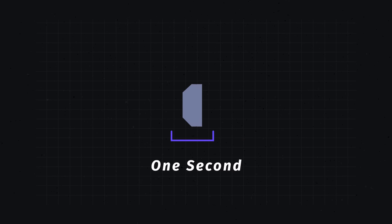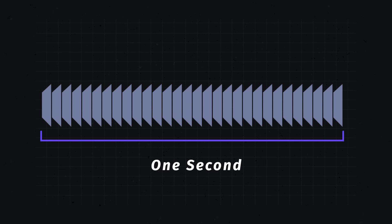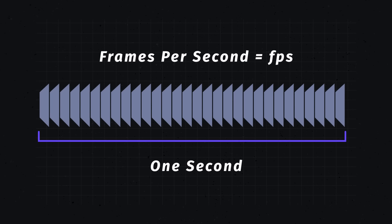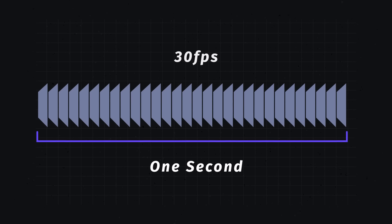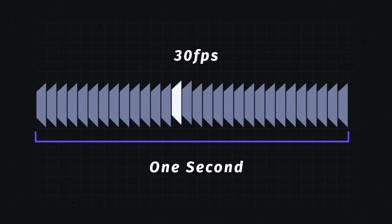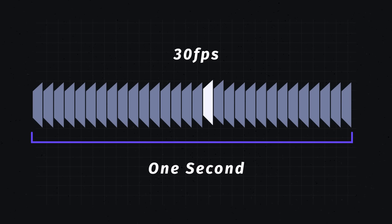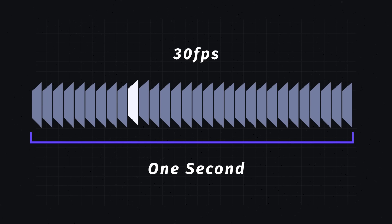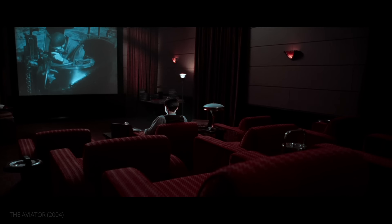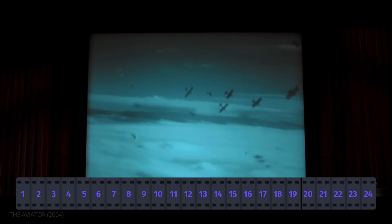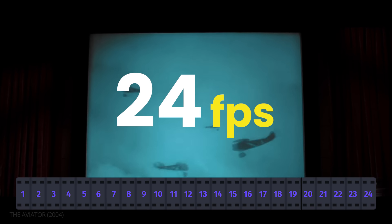The number of individual frames shown within one second is known as frame rate, expressed in frames per second or FPS. For example, a frame rate of 30 FPS contains 30 individual frames within one second. To shoot a narrative that emulates the look of traditional cinema, you will want to shoot at a frame rate of 24 FPS.